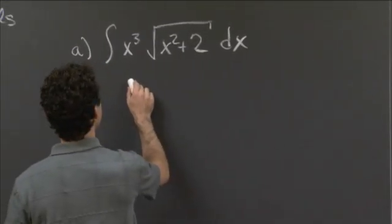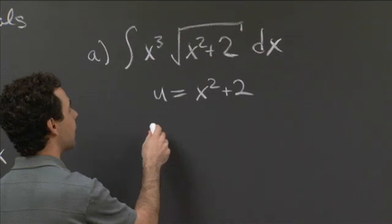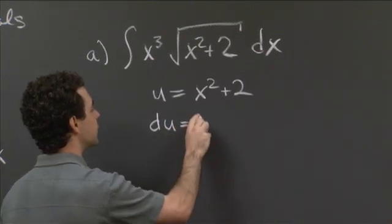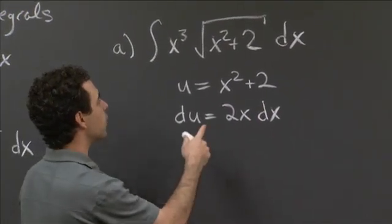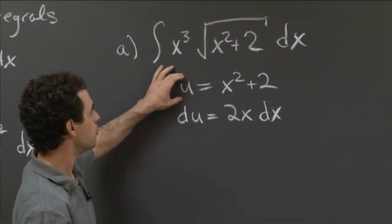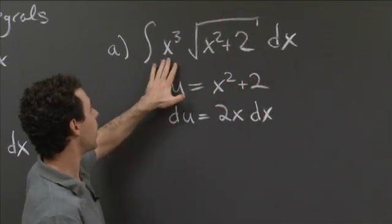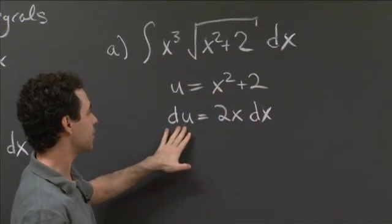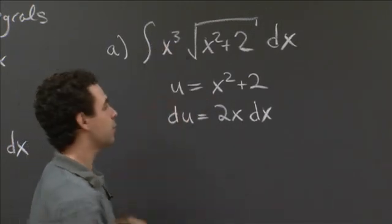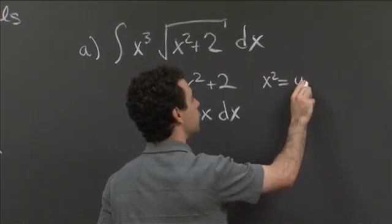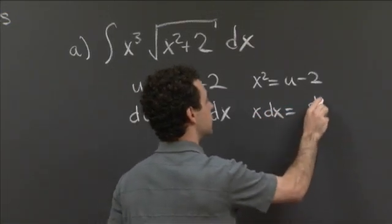So if we're going to try a regular substitution, the natural thing to do is to set u equal to x squared plus 2. In this case, du is equal to 2x dx. The u is going to go into the square root term. The x here pairs up with dx to give us du, and we'll have x squared left over. So we're going to use x squared equals u minus 2, and x dx equals du over 2.